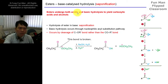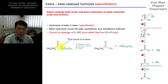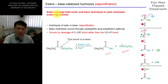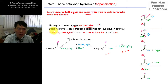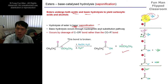Esters can undergo base-catalyzed hydrolysis to reform the fragments that were used to form the ester, giving the alcohol and carboxylic acid. We call this saponification. Esters undergo both acidic and basic hydrolysis to give carboxylic acid and alcohol. For the basic medium, we call this saponification. Basic hydrolysis occurs through the nucleophilic acyl substitution pathway, where the nucleophile is the strong hydroxide, which attacks the C delta-plus.